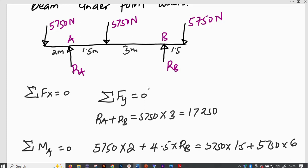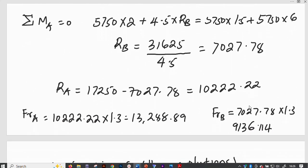Sum of forces in the vertical direction means upward forces are equal to downward forces. Since we have RA and RB pointing vertically upward, then we will have the sum equivalent to 5,750 plus 5,750 plus 5,750, which I've said it is 5,750 times 3, giving us 17,250 Newtons, and we can call that as our first equation.